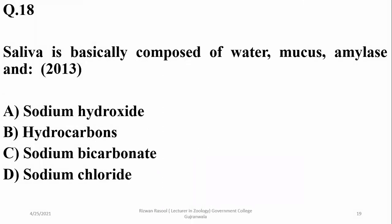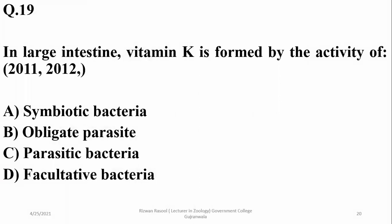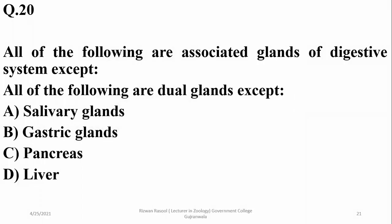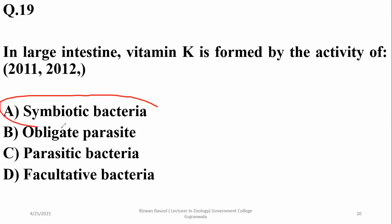Trypsinogen is activated by enterokinase, secreted by the duodenal mucosa, and involved in the activation of trypsinogen. Saliva is basically composed of water, mucus, amylase, and sodium bicarbonate — so charlie. In the large intestine, vitamin K is formed by the activity of symbiotic bacteria such as E. coli.